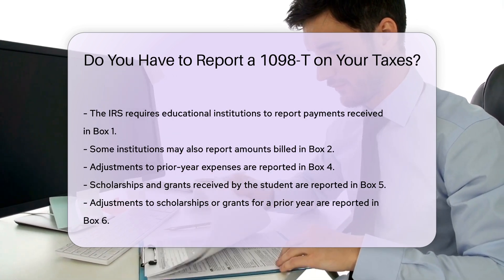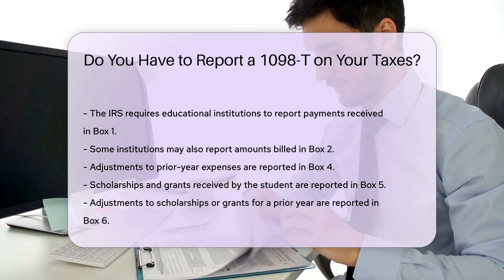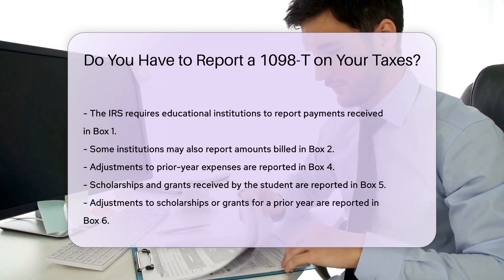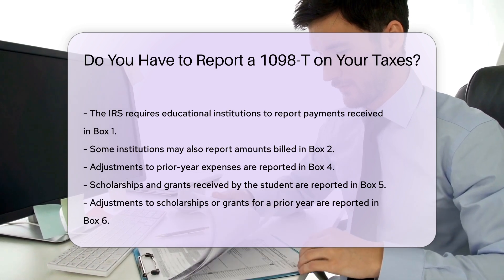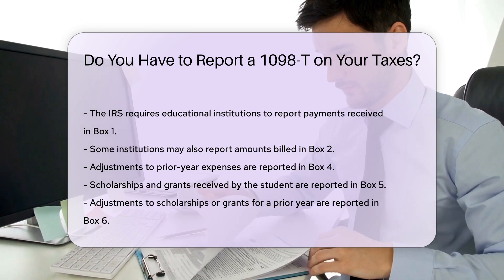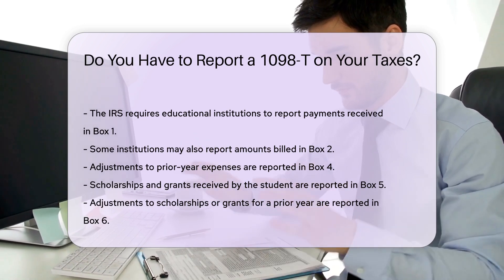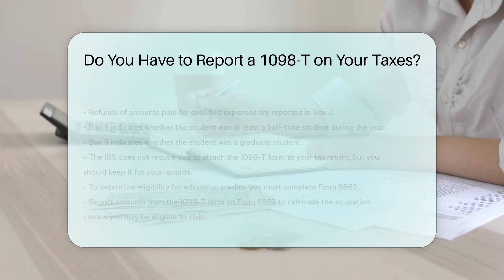Box 8 indicates whether the student was at least a half-time student during the year. Box 9 indicates whether the student was a graduate student.